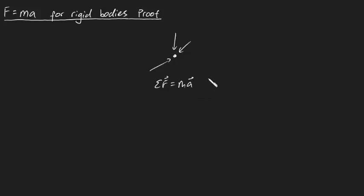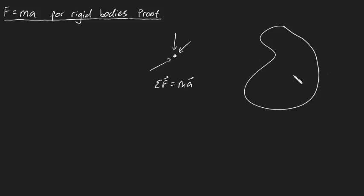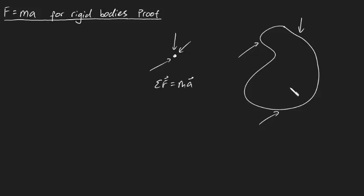But what you probably don't know so well is: let's say you've got a rigid body with a whole bunch of forces acting on it at random points. What formula describes the motion of this rigid body? Is it F equals MA? If so, in what context does it work? How does F equals MA, which is applied to particles, apply for a rigid body?